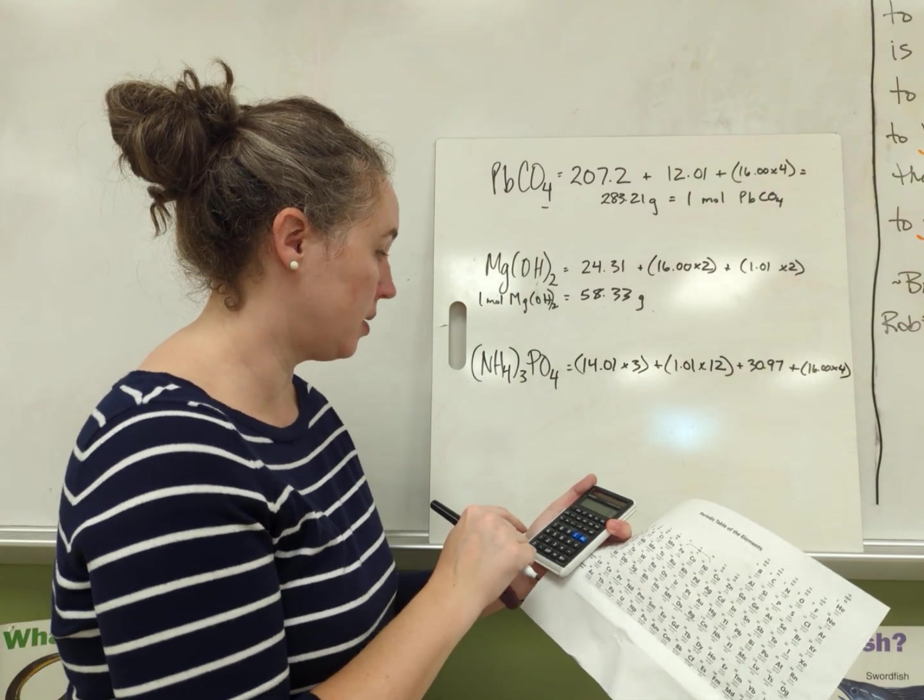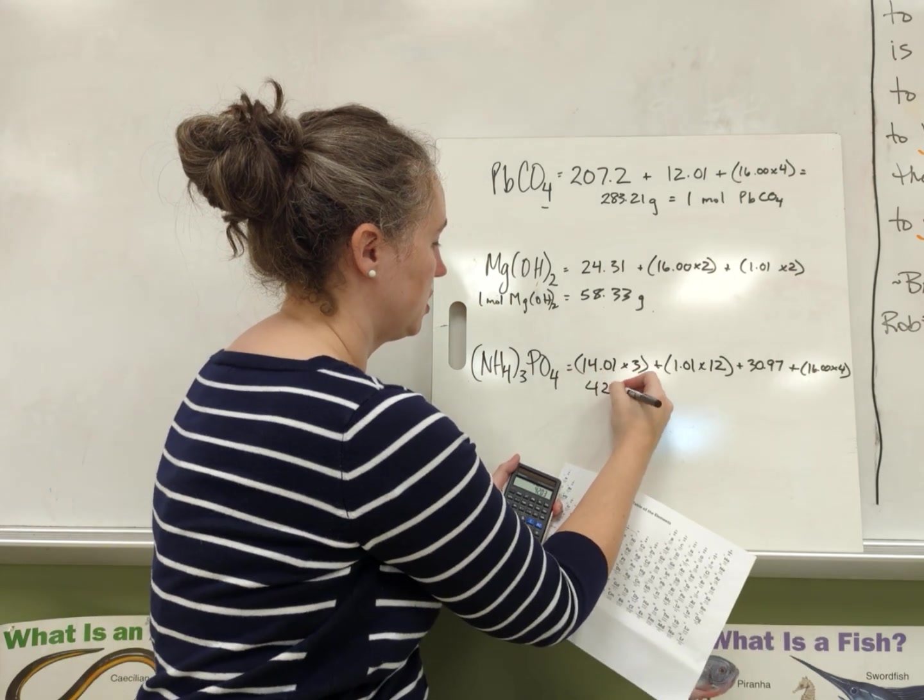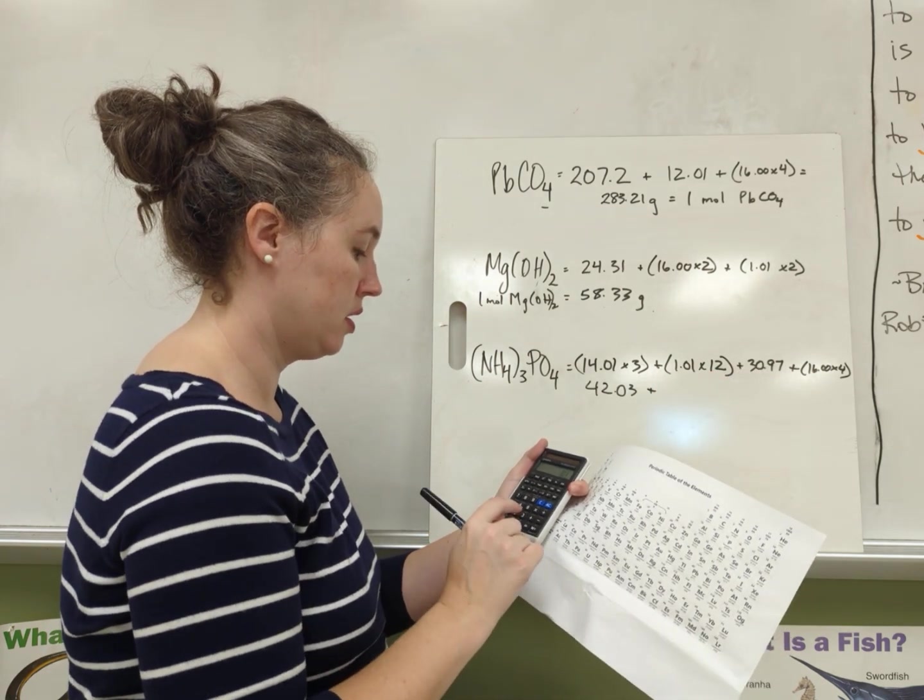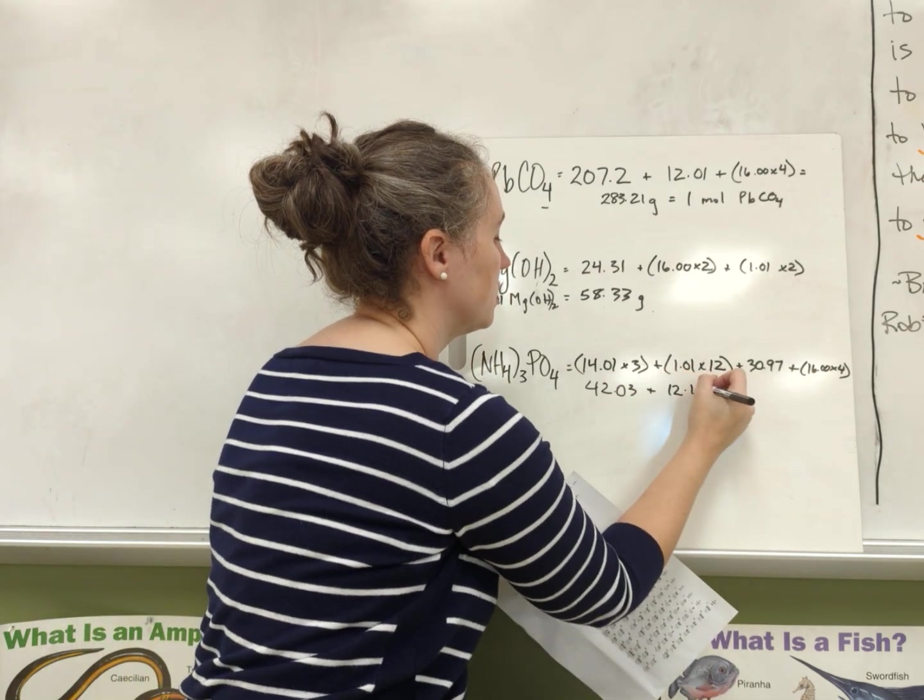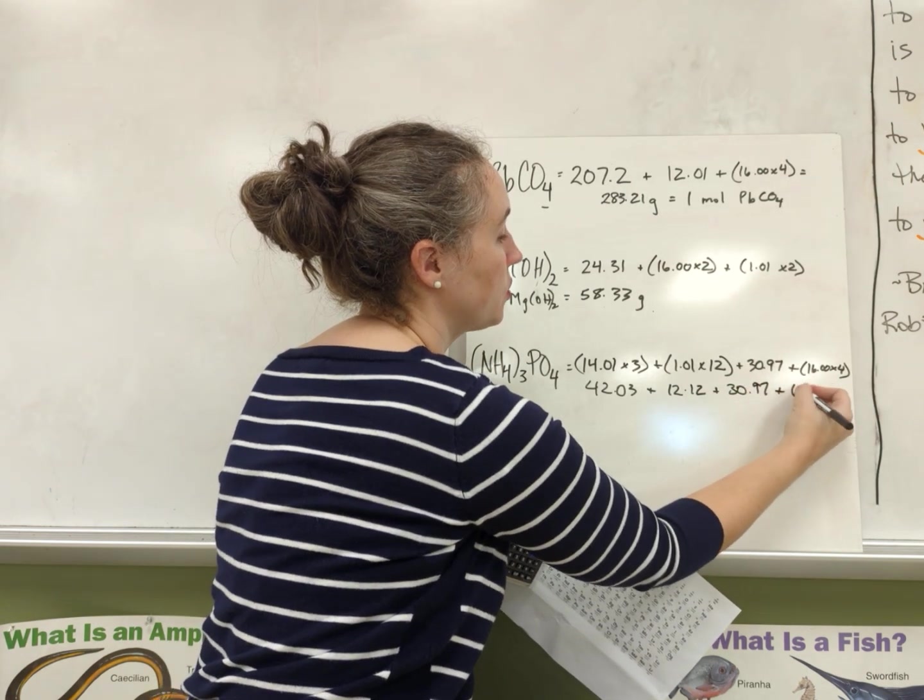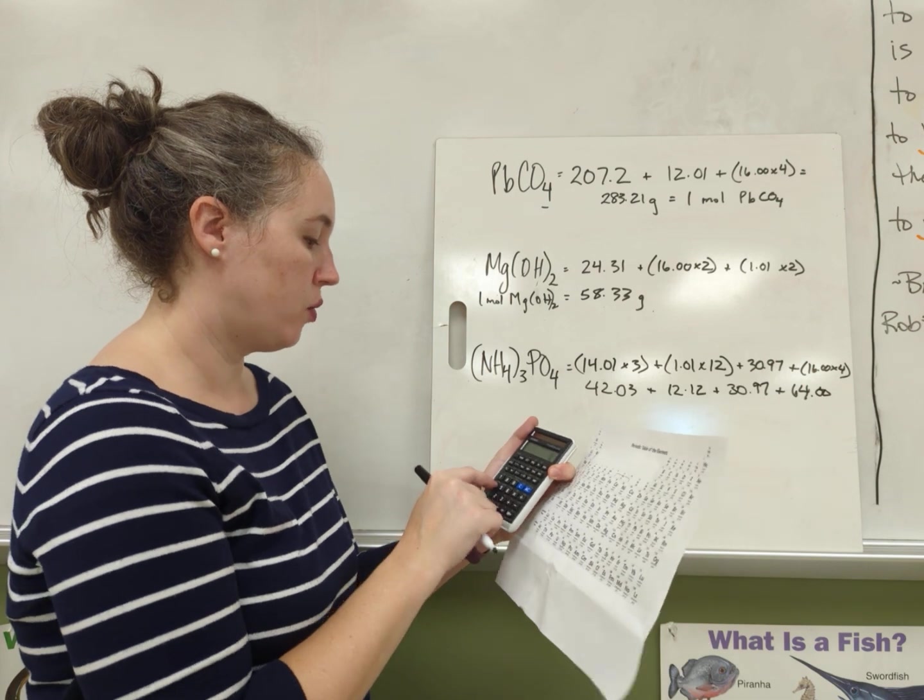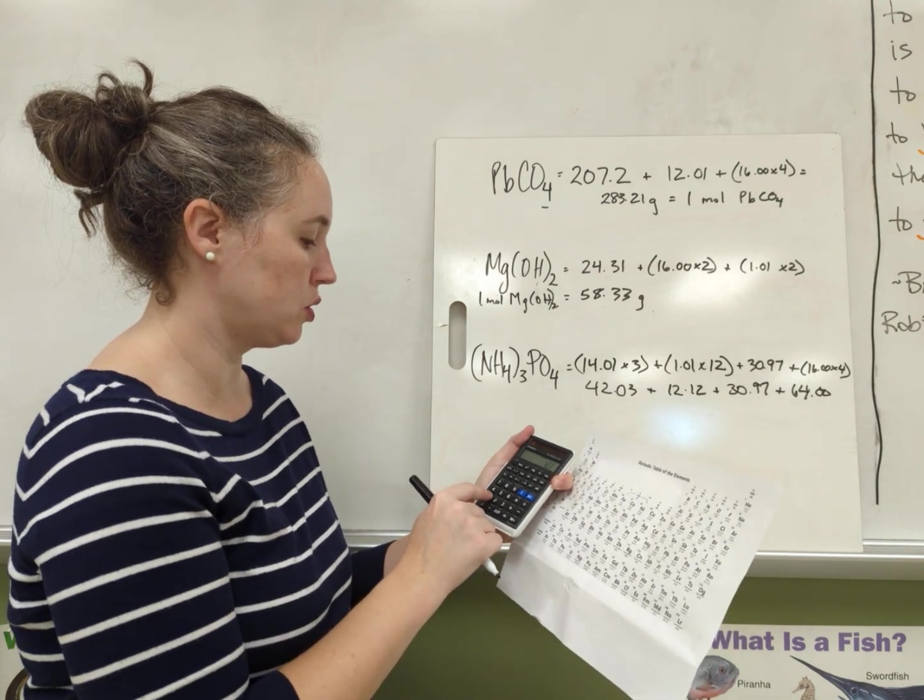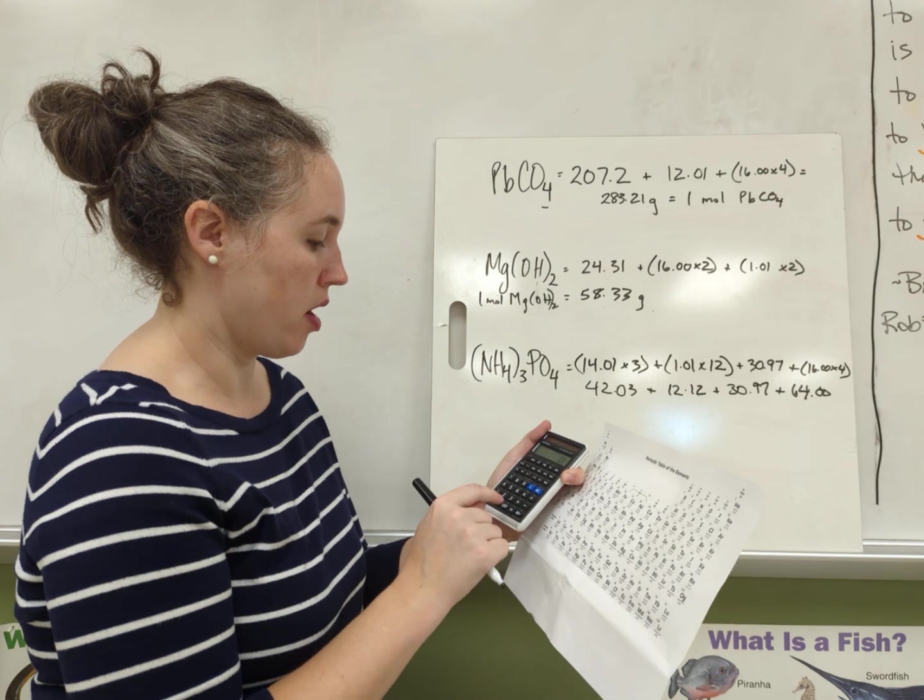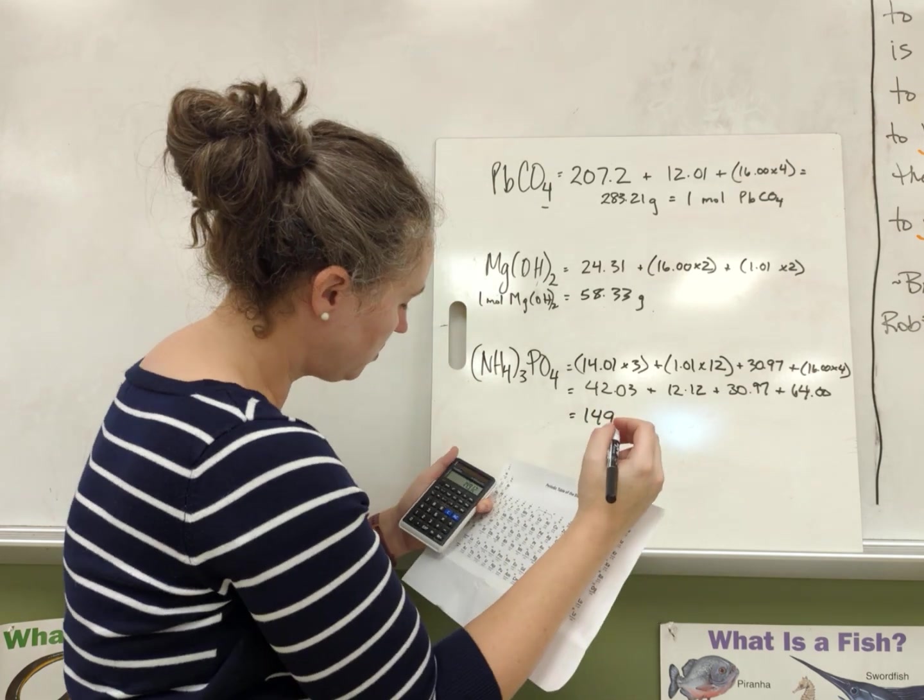So 14.01 times 3 is 42.03, plus 12 times 1.01 is 12.12, plus 30.97 just one of those, plus 64 for oxygens. And then we add them all up. 42.03 plus 12.12 plus 30.97 plus 64 equals 149.12.